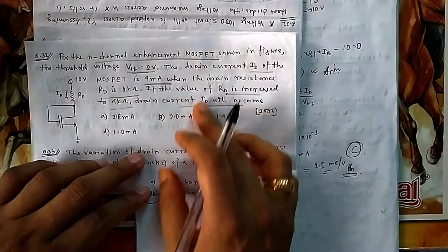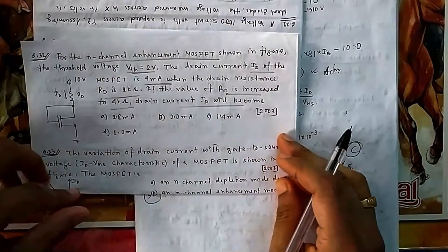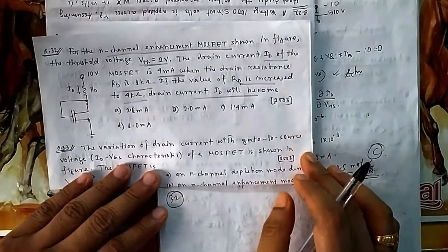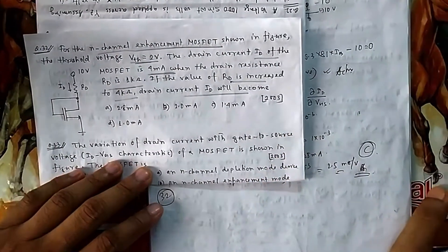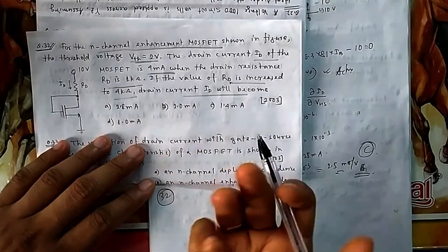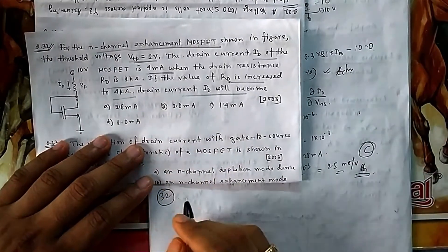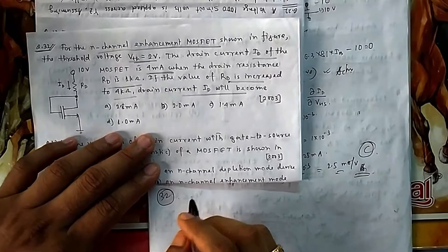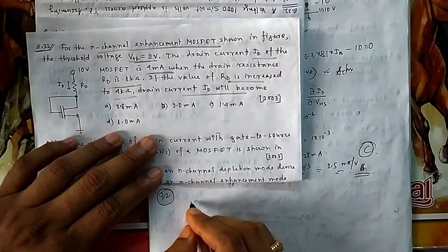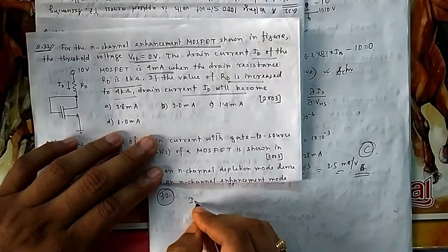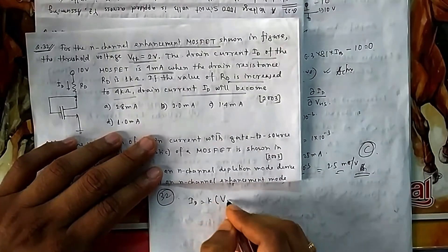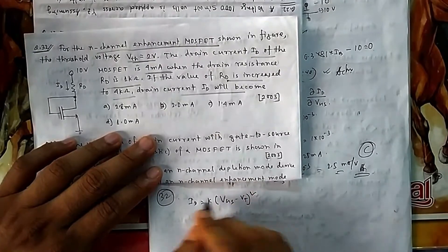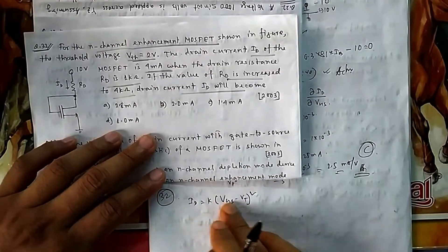For enhancement MOSFET, we always assume saturation first and then verify — similar to assuming active region for BJTs. In saturation, I_D = k × (V_GS − V_T)².